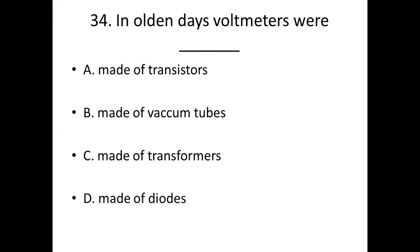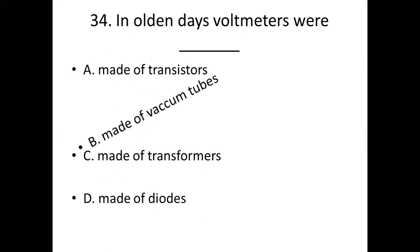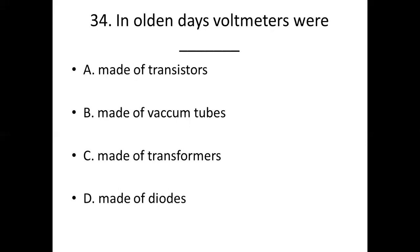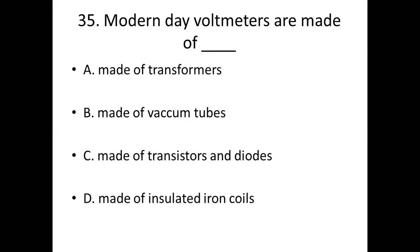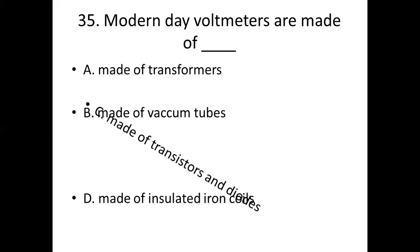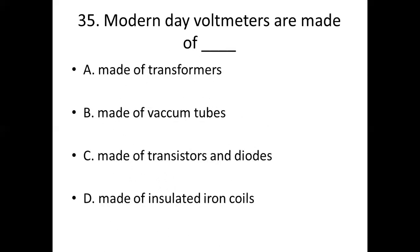34th bit. In olden days, voltmeters were dash. Option A: made of transistors. Option B: made of vacuum tubes. Option C: made of transformers. Option D: made of diodes. Answer: Option C, made of transistors and diodes.